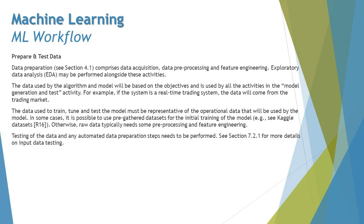Data pre-processing involves removing sensitive information and preparing data so it can be used to train the model to suggest the right outputs rather than hard-coded responses. The data used to train, tune, and test the model must be representative of operational data that will be used by the model. In some cases, pre-gathered datasets can be used for initial training; otherwise, raw data typically needs pre-processing and feature engineering. Testing of the data and any automated data preparation steps will be covered in section 7.2.1.